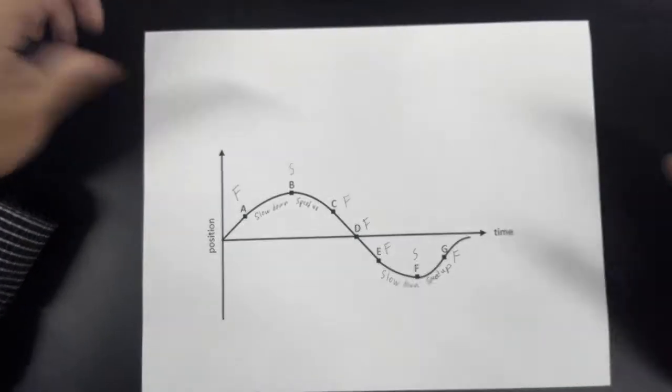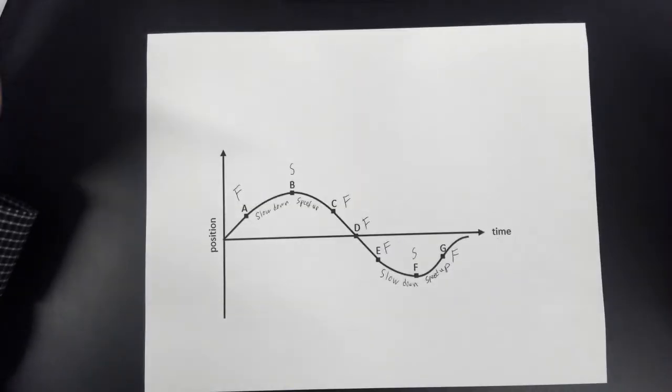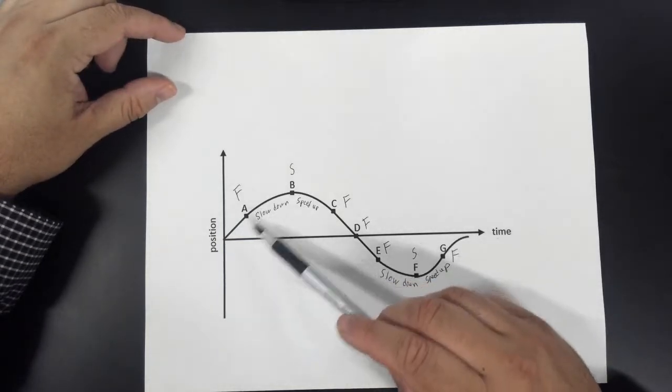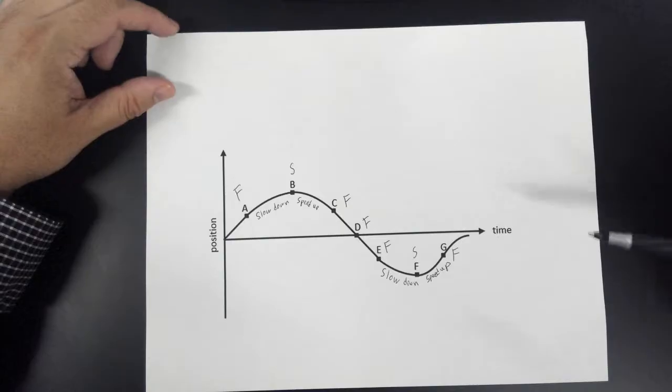So in trying to decide what the speed is, the key thing in a position graph is to look for the slope.